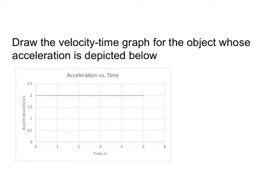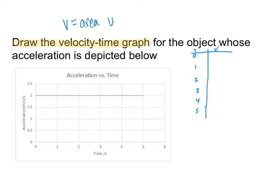Next, we can use acceleration versus time graphs to figure out velocities. We can take an acceleration versus time graph and use it to find an object's velocity after a certain amount of time, or to draw the velocity-time graph of that object. I'm going to create a table of the velocity of the object after each point in time. The important thing to know is that for an acceleration versus time graph, velocity equals the area under the a-versus-t graph.